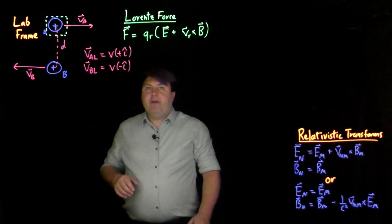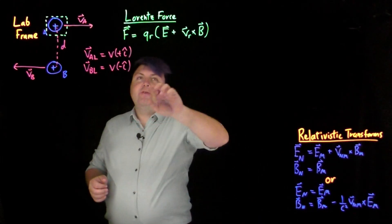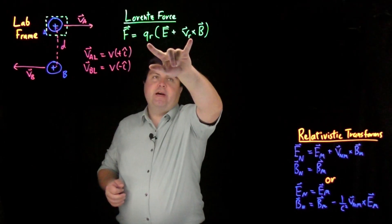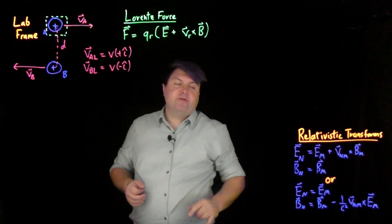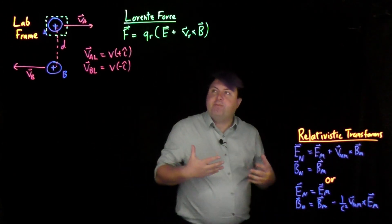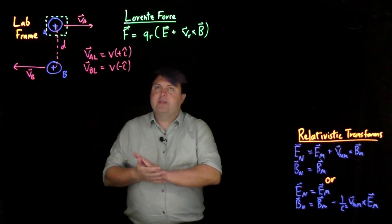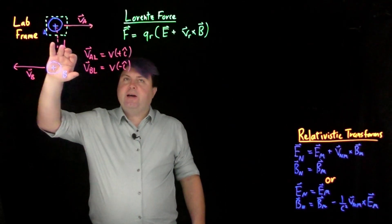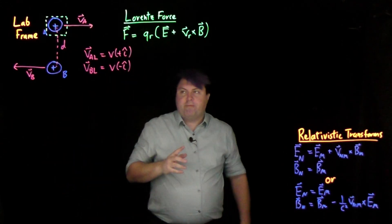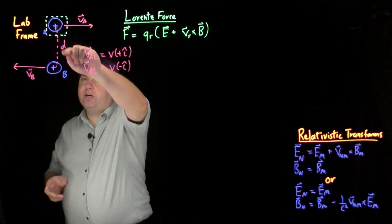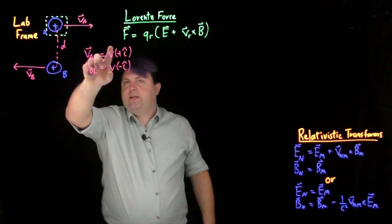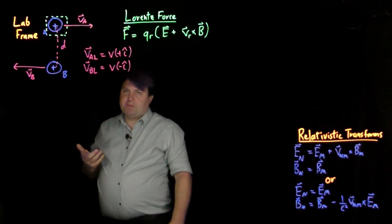Welcome. So we now have our Lorentz force, which is the combination of the charge times the electric field — the electric force — and the charge times the velocity cross with the magnetic field — the magnetic force. We've seen relativistic transforms, but let's put it into action. We're going to start with two protons, charge A and charge B, with the same magnitude of velocity but going in opposite directions.